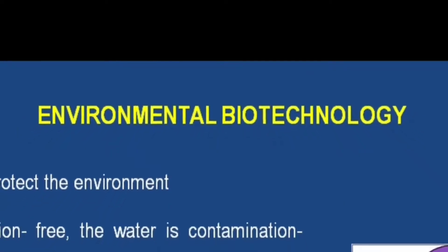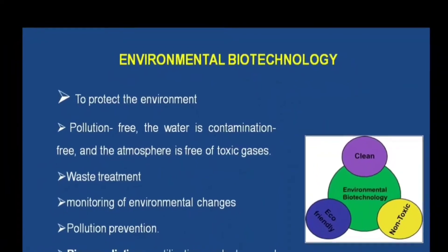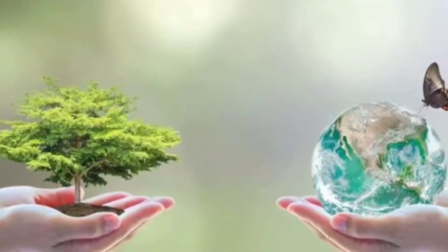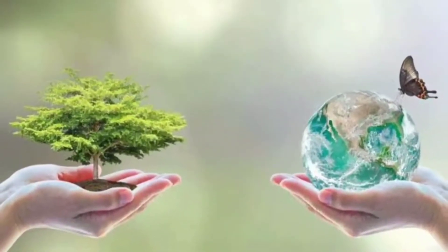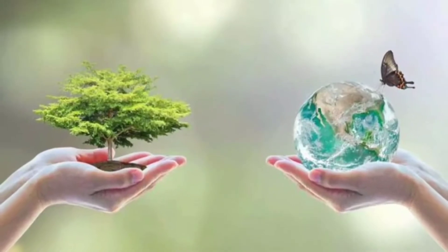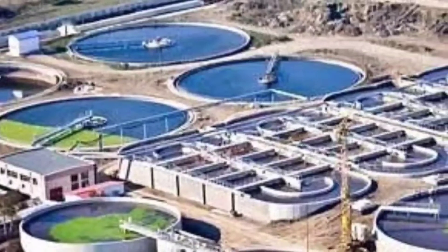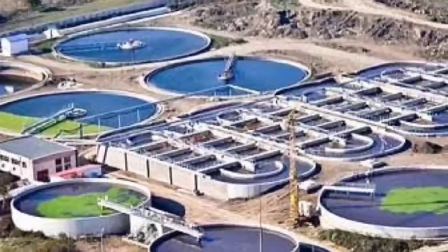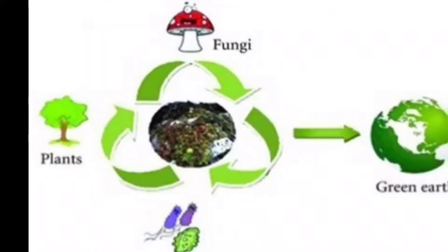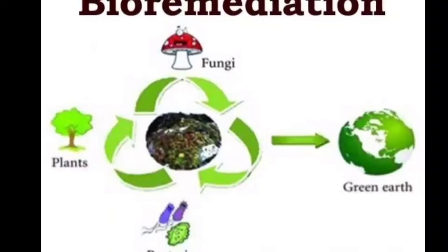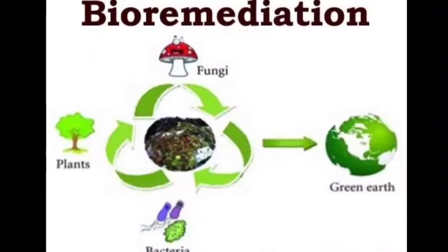Next we can see environmental biotechnology — what are the applications of biotechnology in the environment? The main aim of environmental biotechnology is to protect the environment, make it pollution-free, ensure water is contamination-free, and keep the atmosphere free of toxic gases. Biotechnology has a major role in waste management, especially in wastewater treatment. Bioremediation is one application of biotechnology in which plants and microbes are used to remove toxic chemicals from the environment.